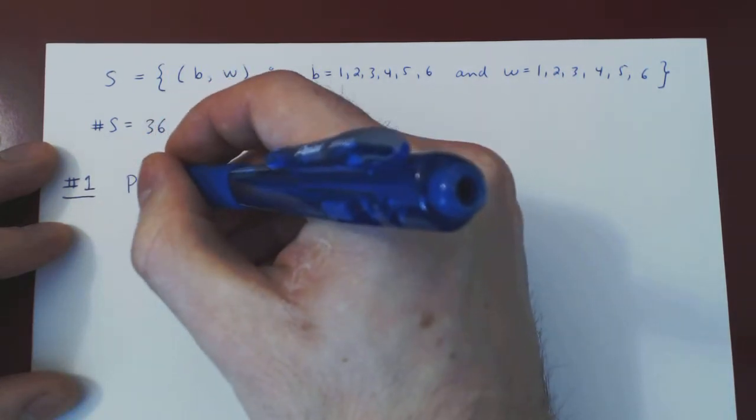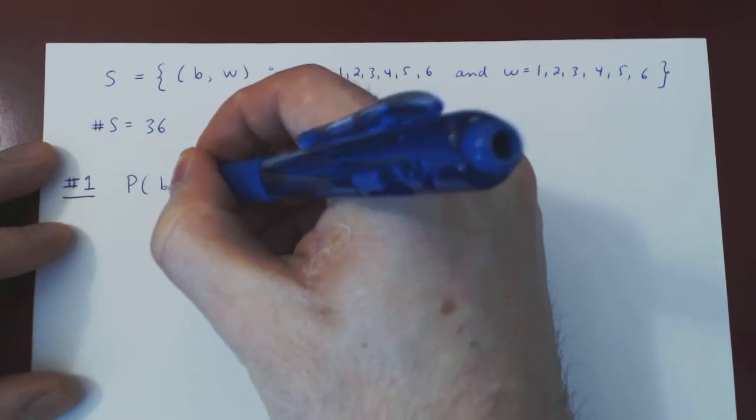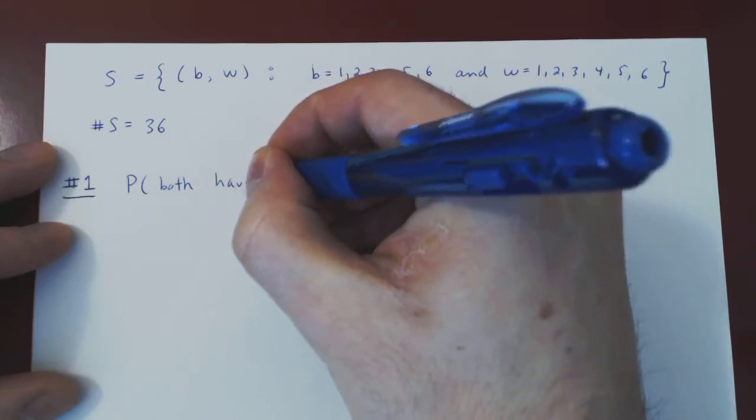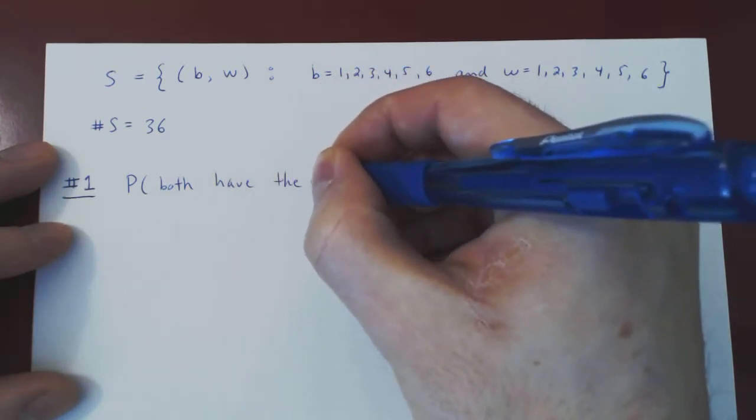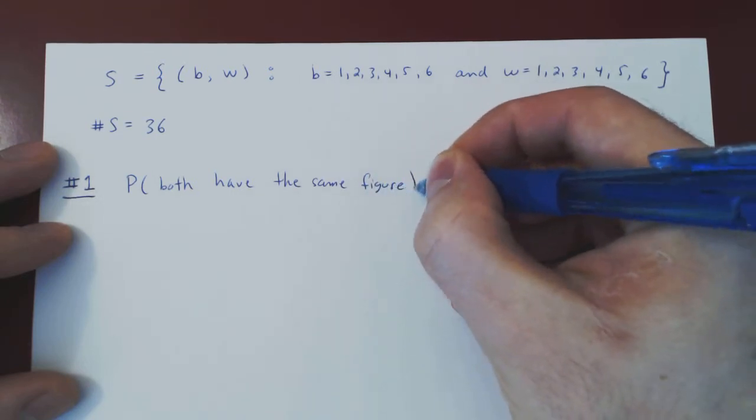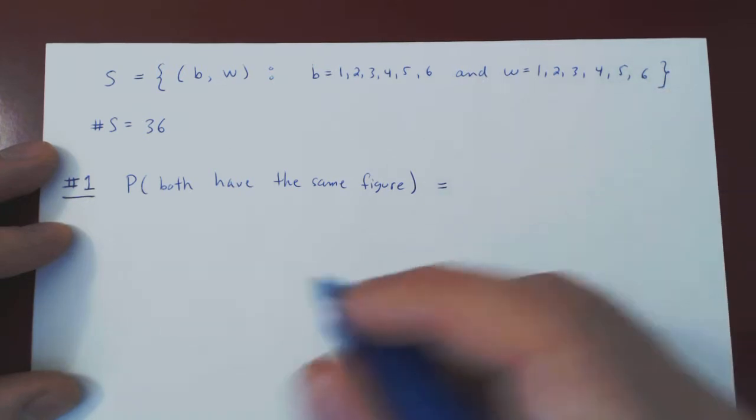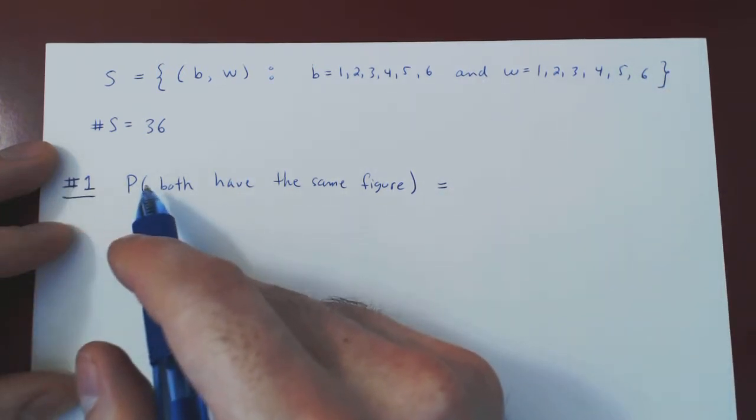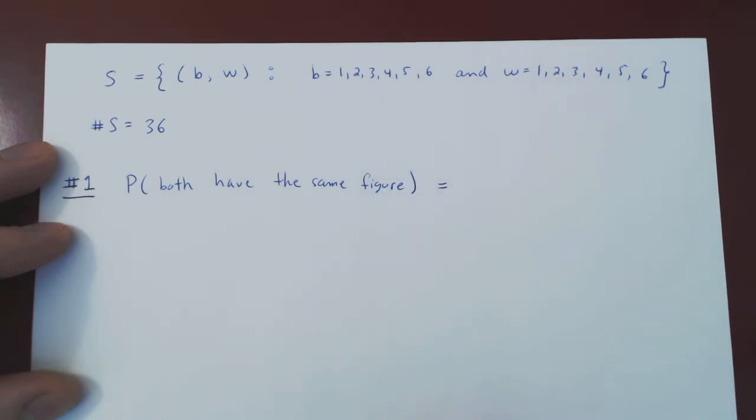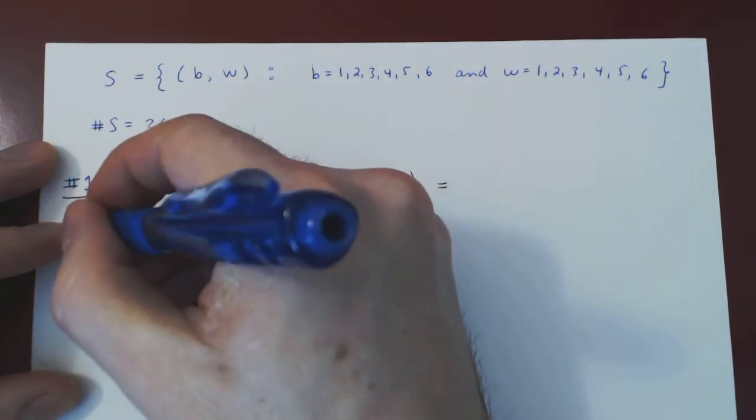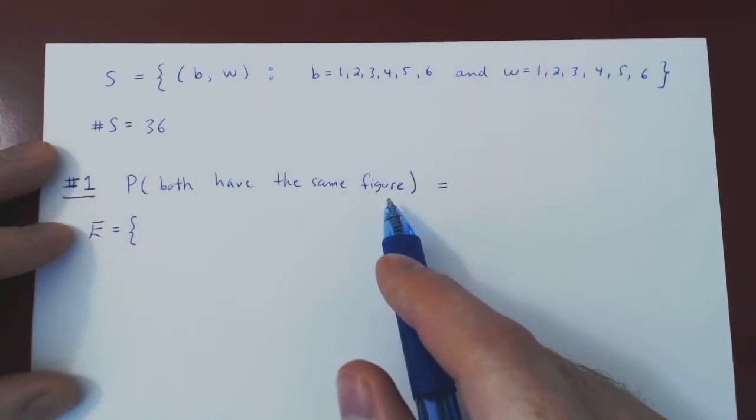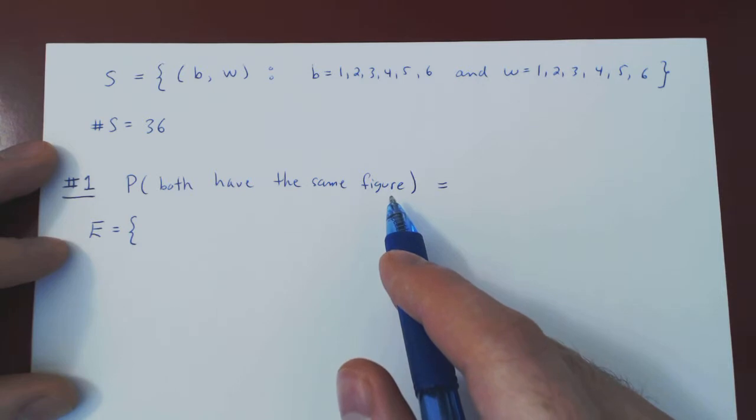So the probability that both have the same figure. Well, as we have just said, all we need now is to count the number of elements in our event of interest. Both have the same figure. Well, think of what are the possibilities.